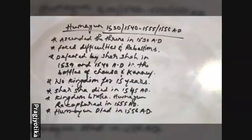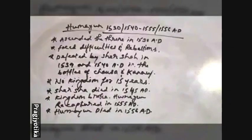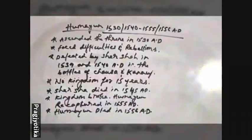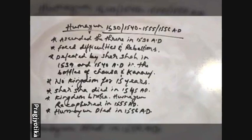The cause of Humayun's death was that he fell down from the staircase of his library. Thus Humayun's rule came to an end, and his son Akbar came and sat on the throne.